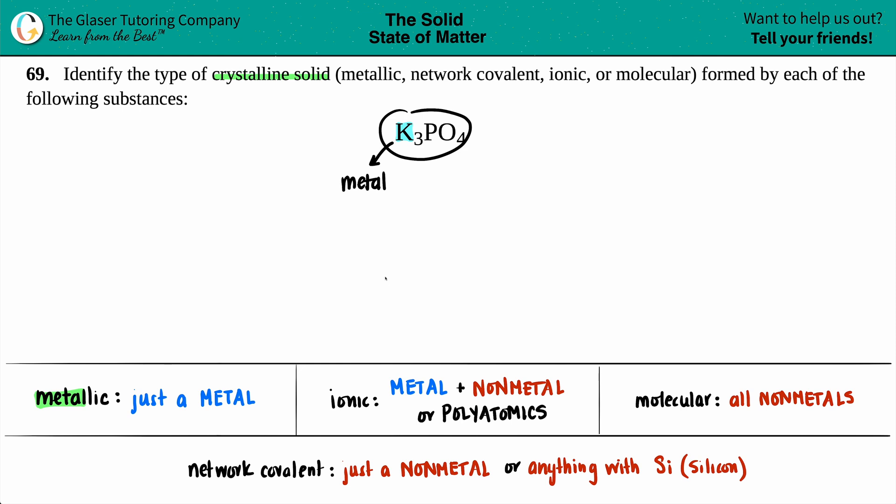So it can't be metallic because I have both metals and non-metals. Is it ionic? Well, ionic crystalline solids are formed with ionic compounds, and there's two criteria for ionic compounds: metal plus non-metal, or if you start seeing polyatomic ions. I do see my metal, and we have phosphorus and oxygen - those are non-metals. So we do have a metal and non-metal, so this is an ionic compound which would be an ionic crystalline solid.